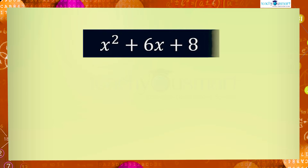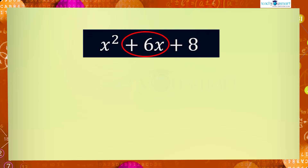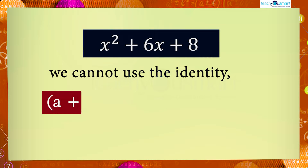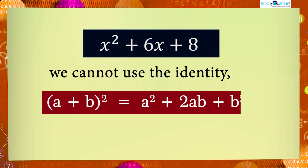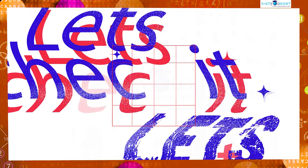Let's see the algebraic expression x² + 6x + 8. It contains three terms and the middle term is positive, but we cannot use the identity (a + b)² = a² + 2ab + b² to factorize it. Why? Let's check.